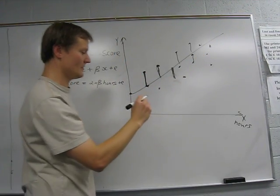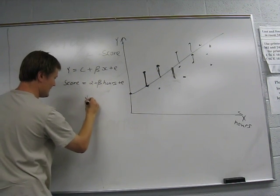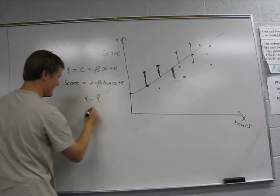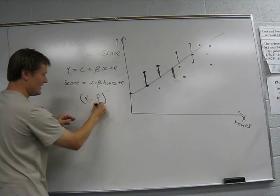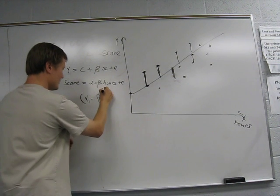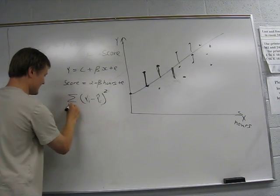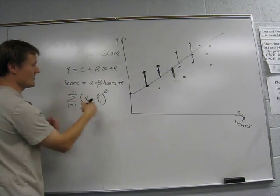In mathematical notation it would look like this. So it takes the difference between the actual value, yi, and the predicted value. It squares this difference, and then it sums it up, adds them all up. N is the number of observations.